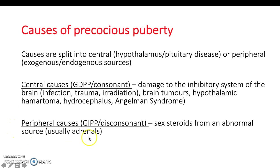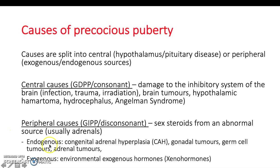Peripheral causes constitute gonadotrophin-independent precocious puberty (GIPP), also known as dissonant. This involves sex steroids coming from another source — either endogenous (from the body) or exogenous (from the environment, such as xenohormones). The most common cause of endogenous GIPP is congenital adrenal hyperplasia, involving insufficiency of 21-hydroxylase. There are many different causes to bear in mind and rule out during investigation. Adrenal insufficiency may present with hypo- or hypertension, electrolyte imbalances, ambiguous genitalia, or virilisation in females.